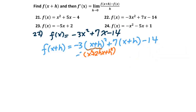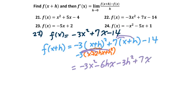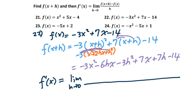We bring down the -3 and apply the distributive property, getting -3x² - 6hx - 3h². Then distributing the +7 gives +7x + 7h - 14. Now we plug into the derivative formula: the limit as h approaches 0 of f(x + h), which is -3x² - 6hx - 3h² + 7x + 7h - 14, minus f(x), over h.